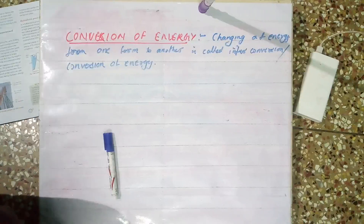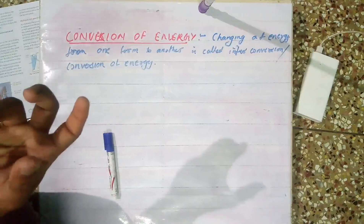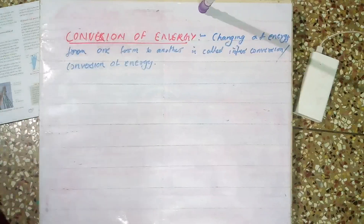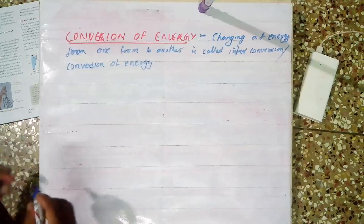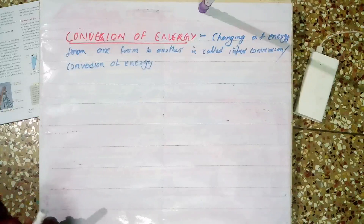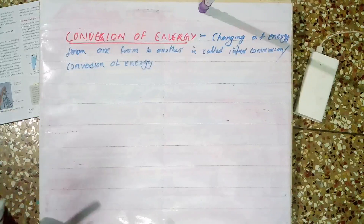Electrical bulb converts electrical energy into light energy. Electrical stove converts electrical energy to heat energy.